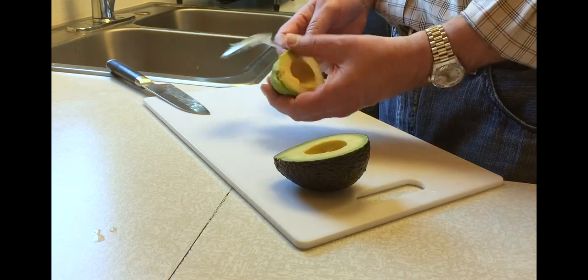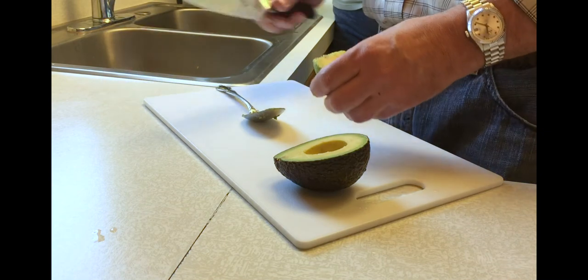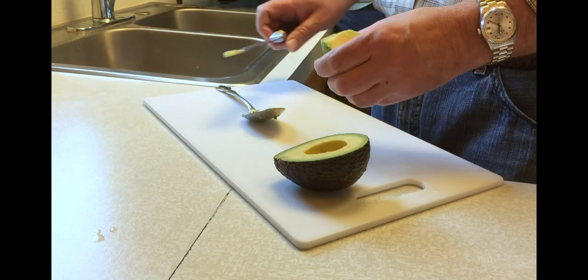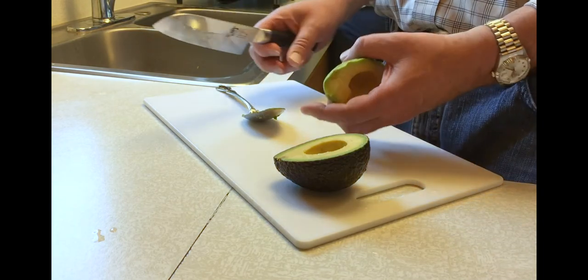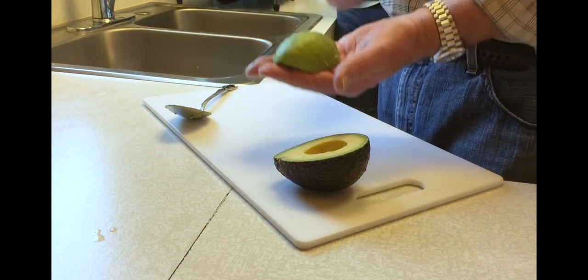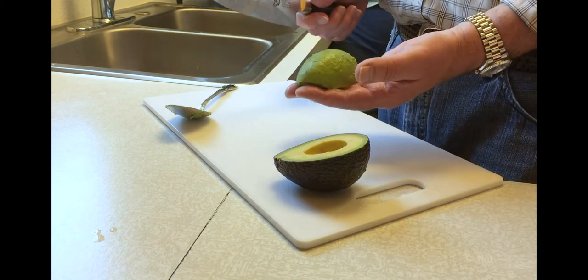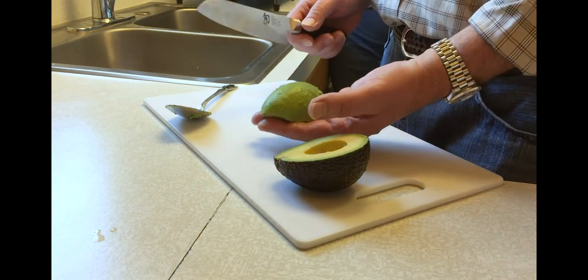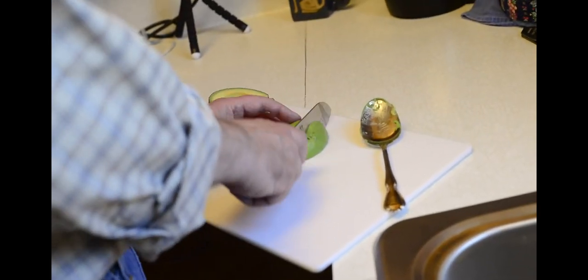So now you have your avocado. We always pull this brown stuff off, we do that just because it's an aesthetic choice. And now you can cut your avocado any kind of way you want. I always cut it in my hand but that's because I'm a thrill seeker and I like danger. You should not do that, you should cut your avocado this way.